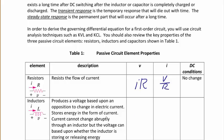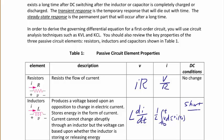An inductor produces a voltage based upon opposition to change in electric current; it is made of coils and stores energy in the form of current. Current cannot change abruptly through an inductor, but the voltage can based upon whether the inductor is storing or releasing energy. The voltage for an inductor is defined as V equals L di/dt, or if you solve for current, it's 1/L times the integral from T0 to T of V dτ, plus the initial energy stored in the inductor, if any. Under DC conditions, an inductor looks like a short circuit because voltage equals L di/dt, and if you have a constant current, the derivative is zero, and a short circuit represents zero volts.